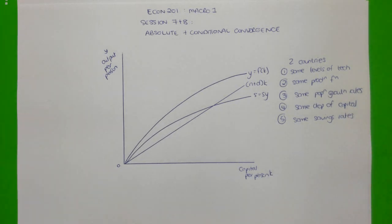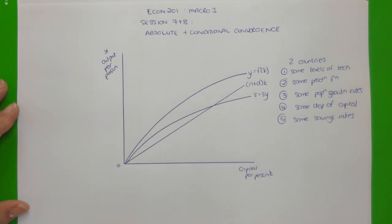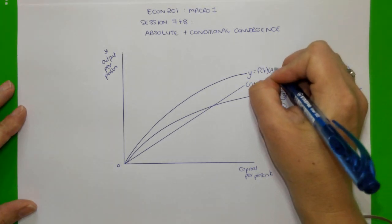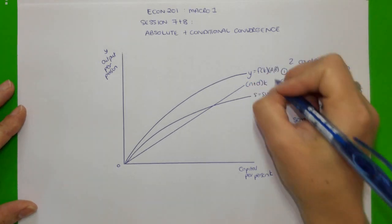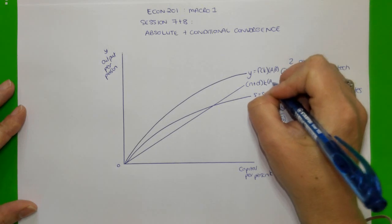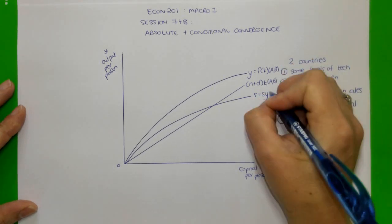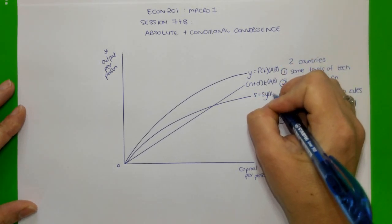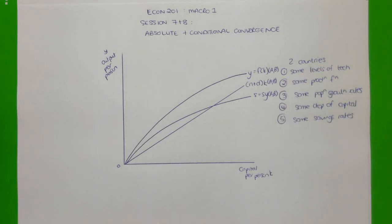Because the countries are all the same between them, that's what allows us to draw a single production function and assume it applies to both countries, a single investment requirement line for both countries, and a single savings function which also applies to both countries.